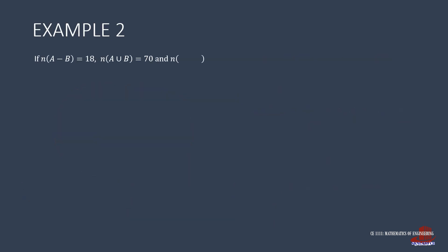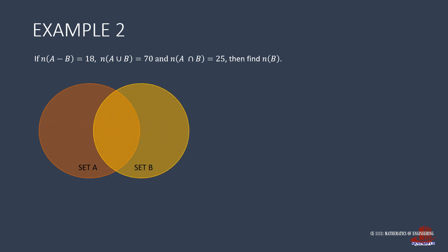The second example states, if the number of elements in the difference of A and B is 18, their union gives 70 elements and their intersection yields 25 elements, how many elements are in set B? Seeing intersections and unions in the given, we can draw two overlapping circles and have them designated as sets A and B.